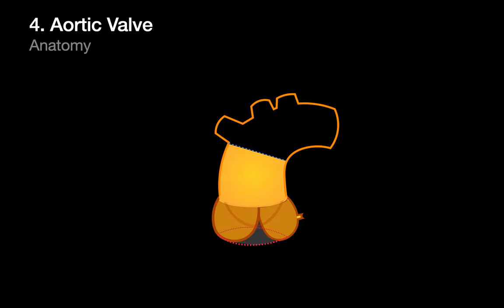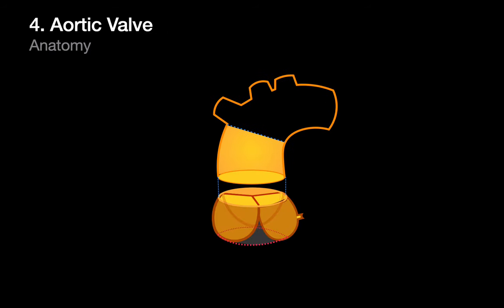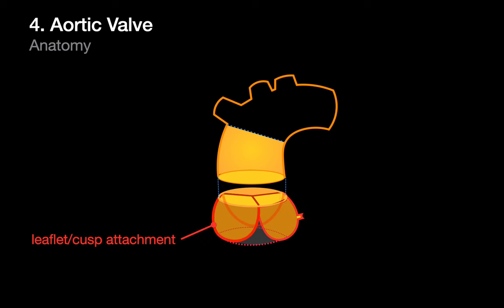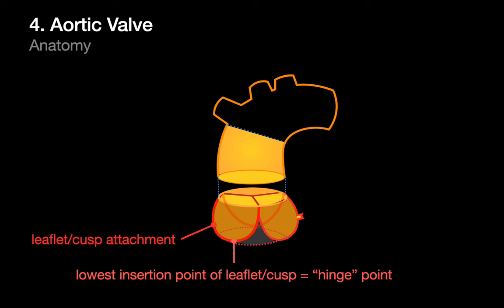Let's begin with a brief review of the aortic valve and its associated anatomy. The aortic valve consists of three thin flaps of tissue that can be referred to as either leaflets or cusps. Each leaflet or cusp is attached to the aortic wall along a U-shaped course. The lowest attachment or insertion point of a leaflet or cusp is the hinge point, and the apices where the attachment sites of any two leaflets meet is a commissure.